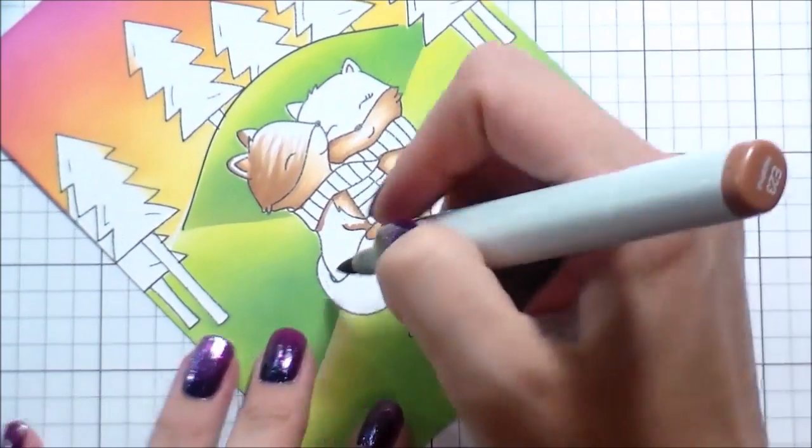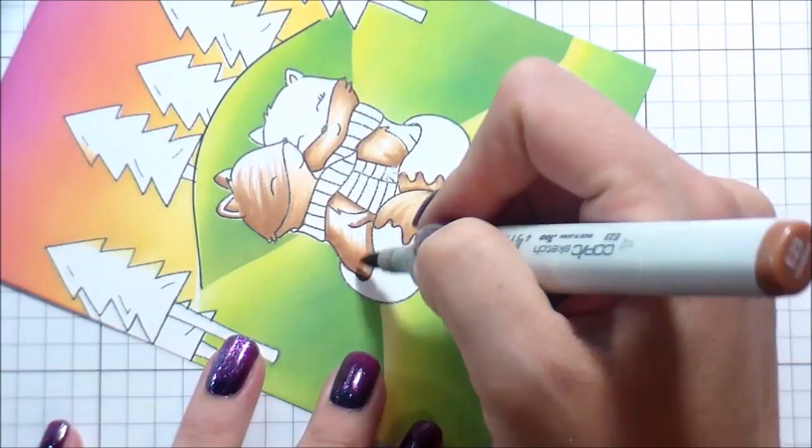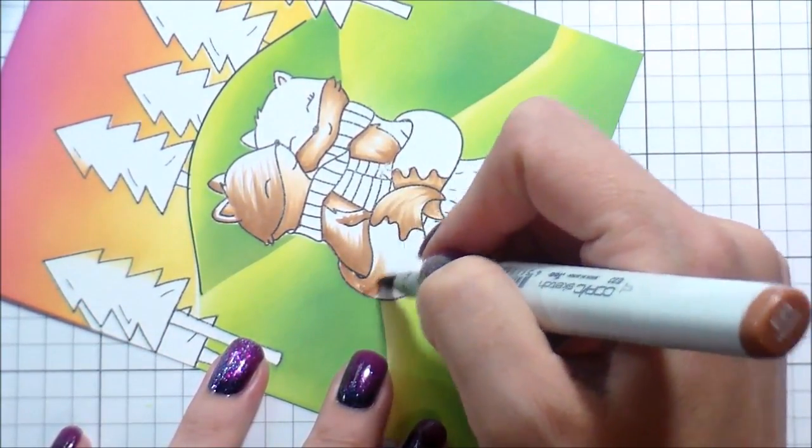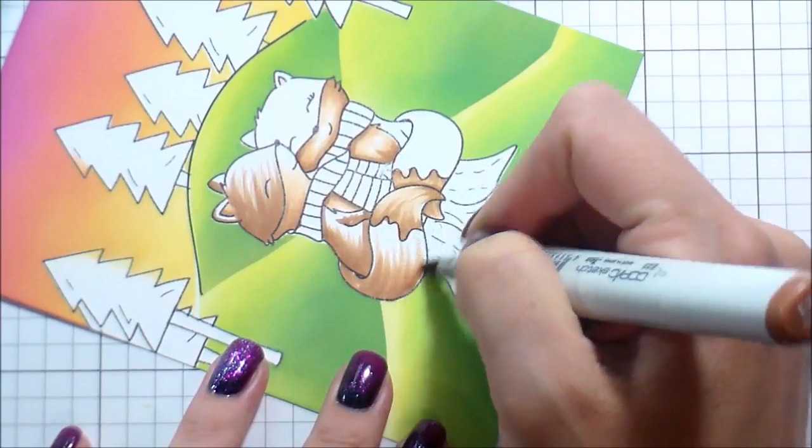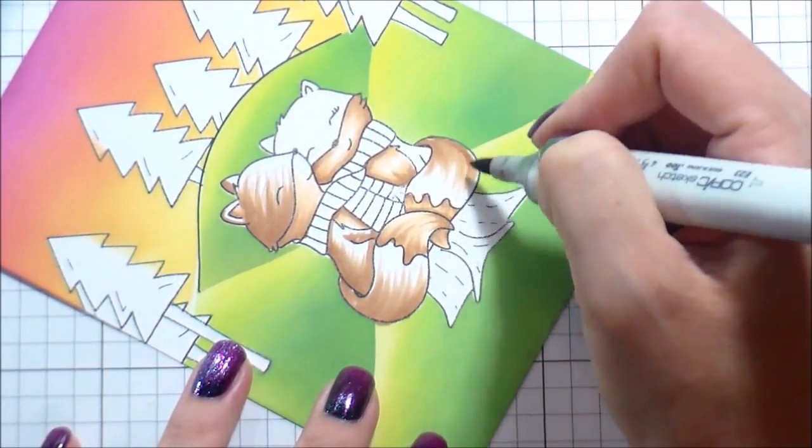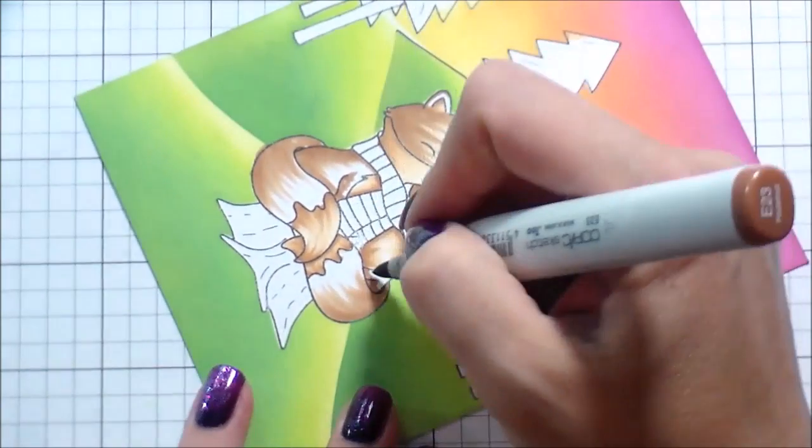So here on their actual bodies, my lightest color is going to be the E23. It was the darkest in the shading of their bellies. So I'm adding shading kind of to the outsides of their bodies, especially where their tails wrap around.